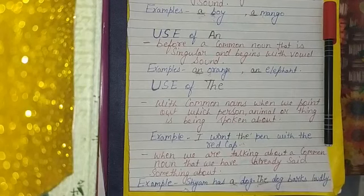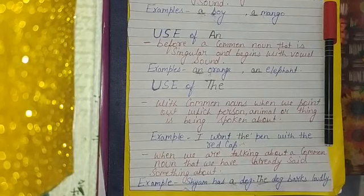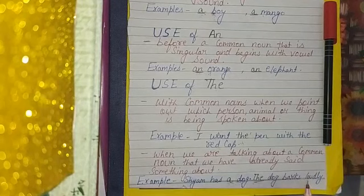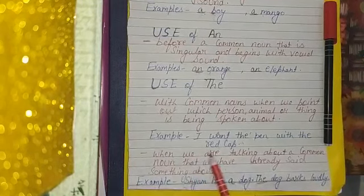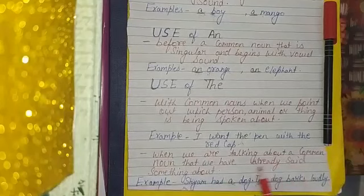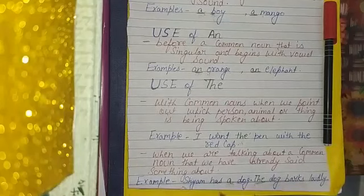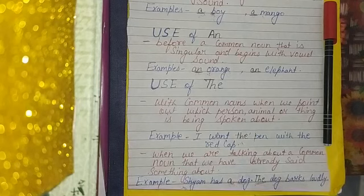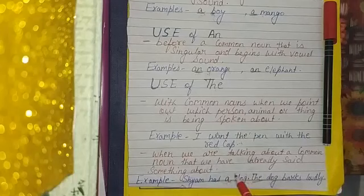The second example is: Sham has a dog. The dog barks loudly. When we are talking about a common noun that we have already mentioned, and we refer to the same thing again, we use the. The second time we talk about it, it becomes the.